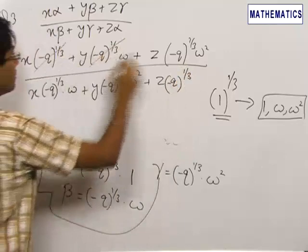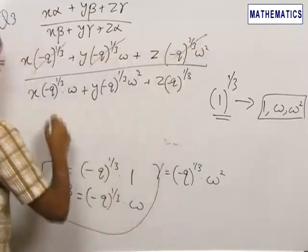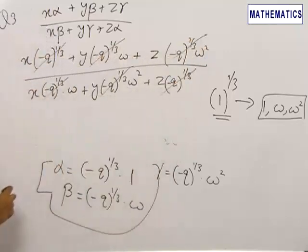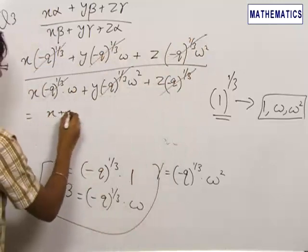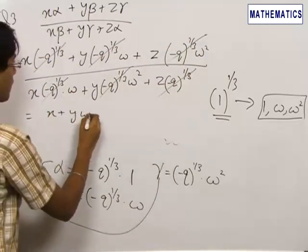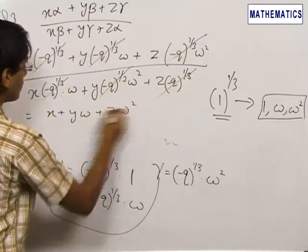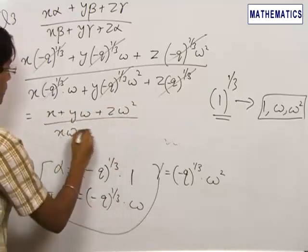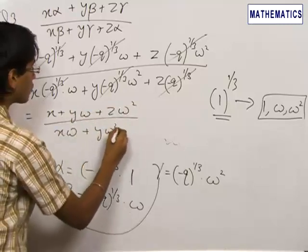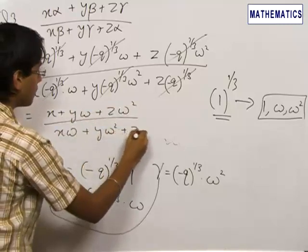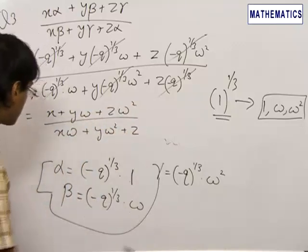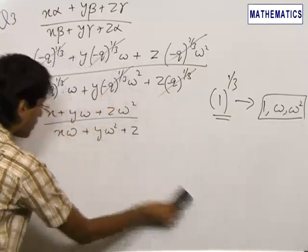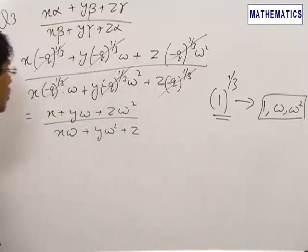The factor -(q^(1/3)) cancels from both the numerator and the denominator, leaving us with x + y·omega + z·omega squared over x·omega + y·omega squared + z, where omega and omega squared are the cube roots of unity.